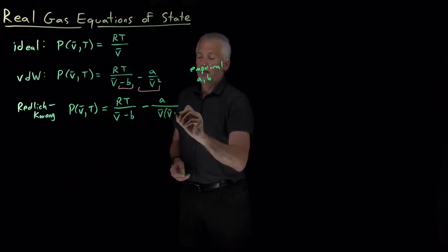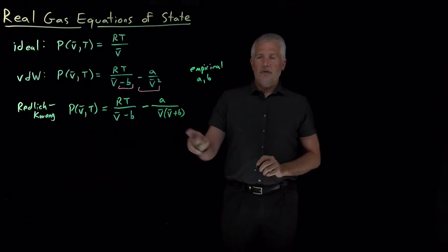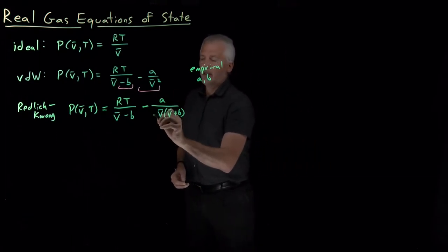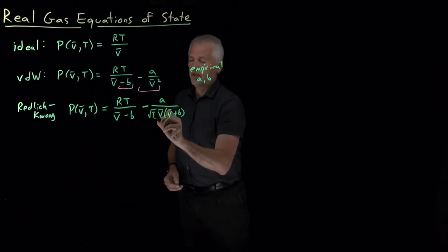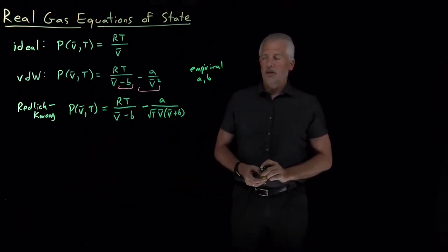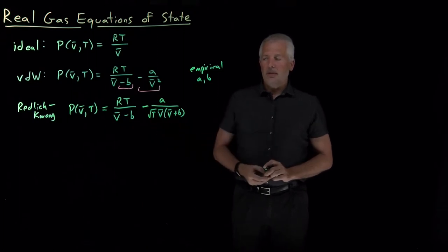But now with the additional adjustment that I need to account for some effect of the finite molecular volume in the intermolecular interaction term, and there also appears a square root of T in the denominator of this intermolecular interaction term, effectively accounting for the fact that those intermolecular interactions may have greater or lesser importance at different temperatures.